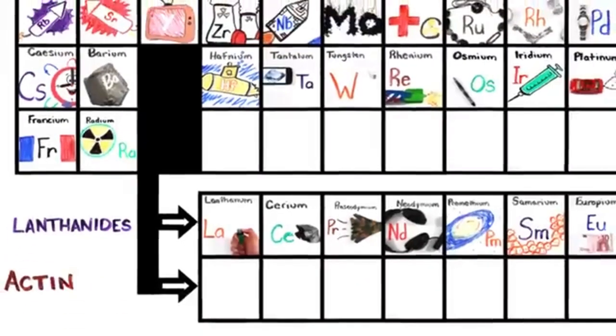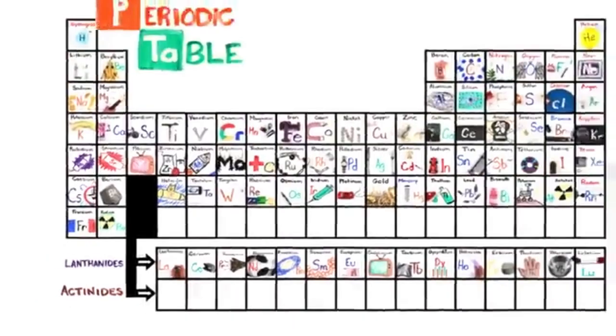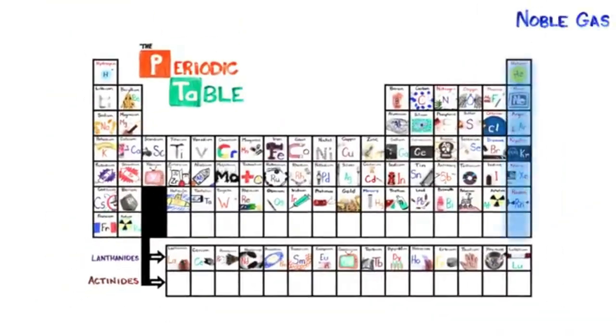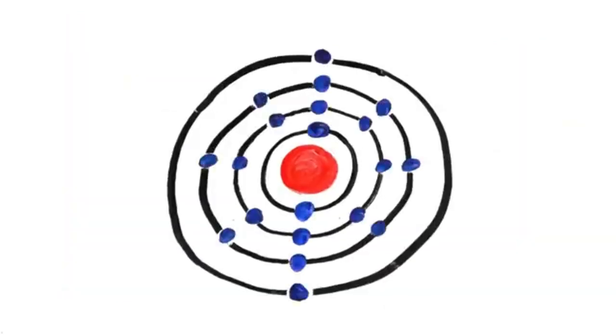This is the Periodic Table, noble gas is stable, halogens and alkali react aggressively. Each period will see new outer shells while electrons are added moving to the right.